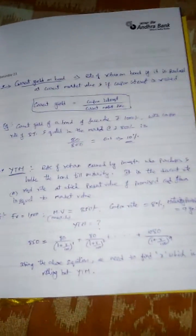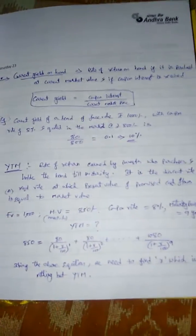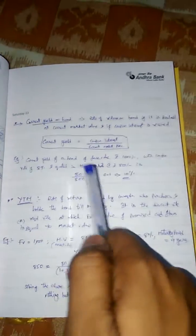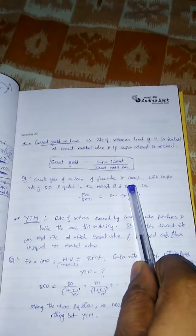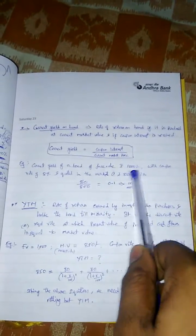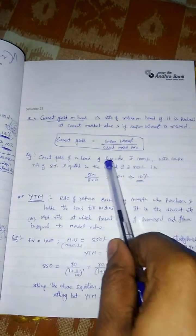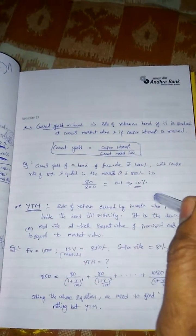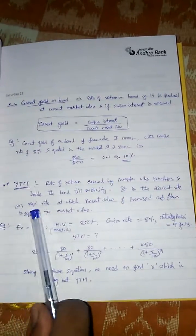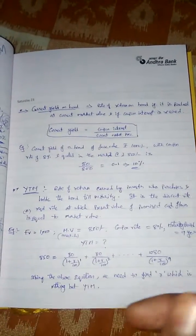Next, two other important terminologies in bond valuation: current yield and YTM (yield to maturity). Current yield of a bond is nothing but coupon interest divided by the current market price. For example, if the current market price is 800, and coupon interest is 80, then current yield is 80/800 = 0.1. Always remember, current yield must be expressed as a percentage, so that comes to 10%.